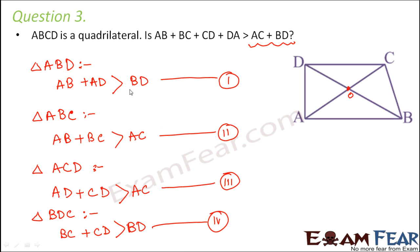Now what we do is we are going to add up all of these. We will add equations 1, 2, 3, and 4. When we add them, on the left hand side we get AB plus AD plus AB plus BC plus AD plus CD plus BC plus CD. This is greater than BD plus AC plus AC plus BD.